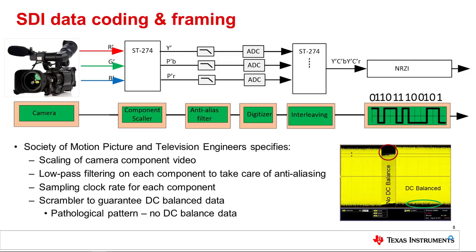An equalizer pathological pattern has 19 zeros followed by a single one or vice versa. This pattern can stress coax equalizers. There is also another pattern for stressing SDI retimers called PLL pathological. This pattern has 20 zeros followed by 21s or vice versa.